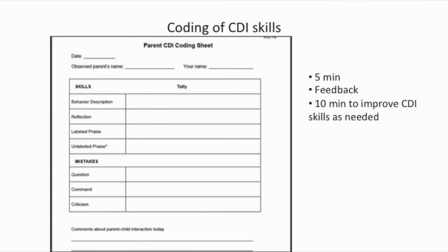The five-minute coding of CDI skills is done on the parent CDI coding sheet, followed by immediate feedback telling the parent whether they're meeting CDI mastery skills. If they need improvement, about ten minutes of coaching can bring them back up to mastery level before proceeding to PDI.